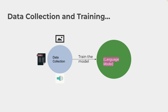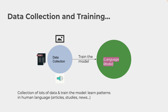The model has to be trained on a lot of different data, and this training process has to be preceded by data collection. There's data collection that happens — textual data, and sometimes audio, images, and so forth. That data is used to train the language model so that it has its core knowledge. What happens is that the model then learns patterns in human language through articles, studies, news, and so forth.